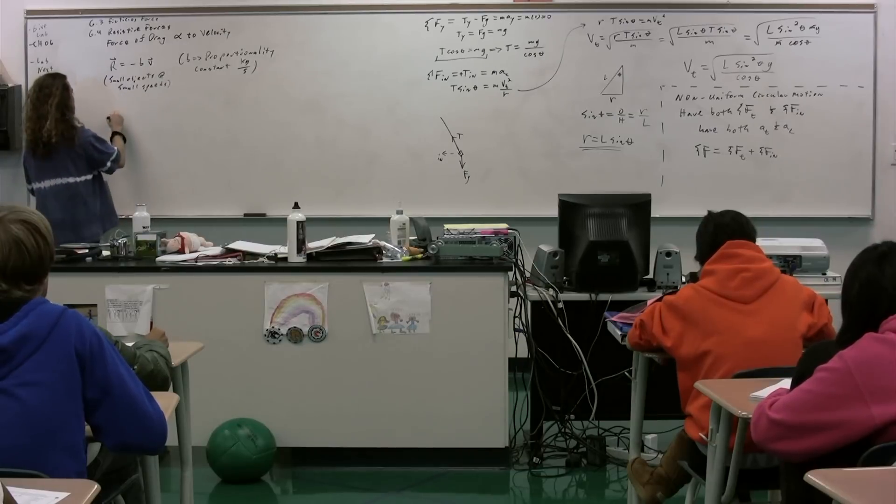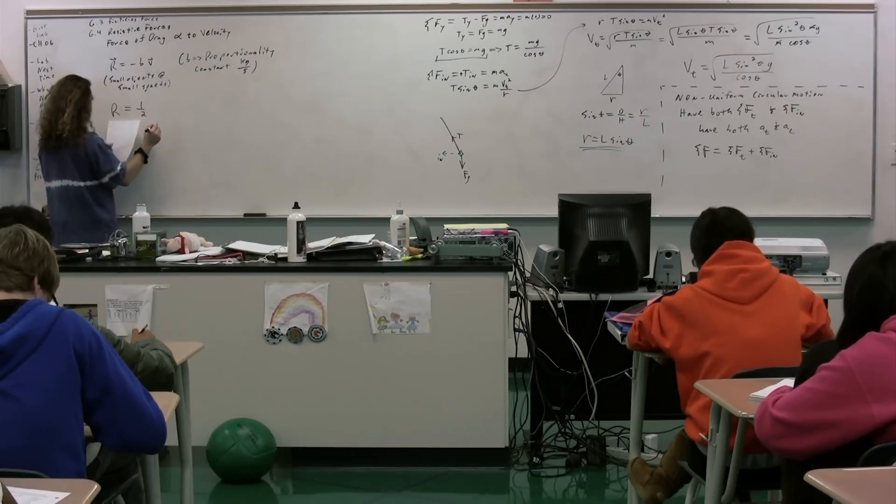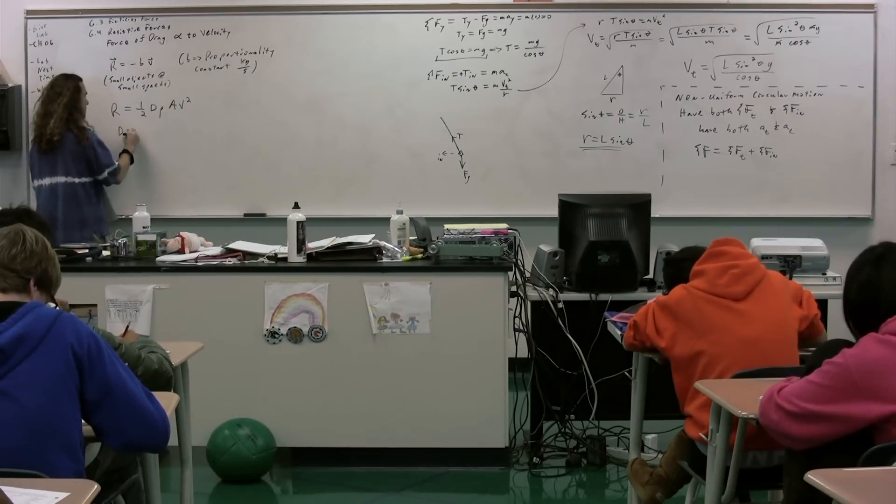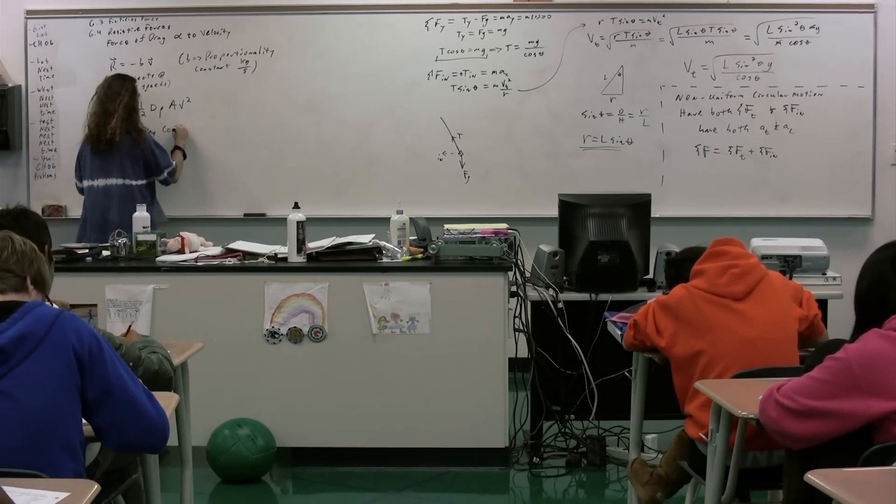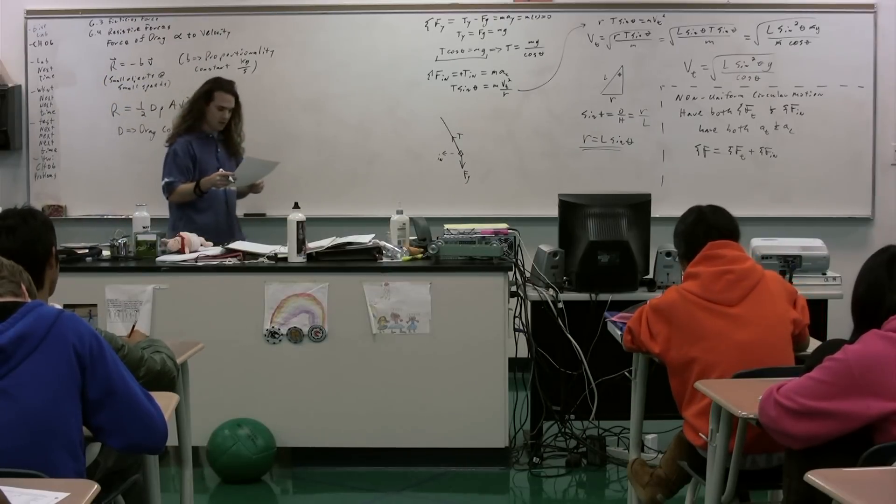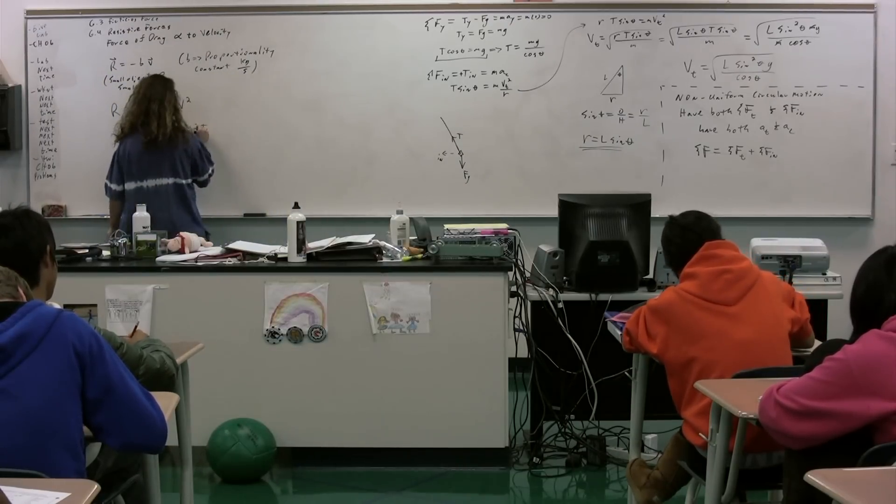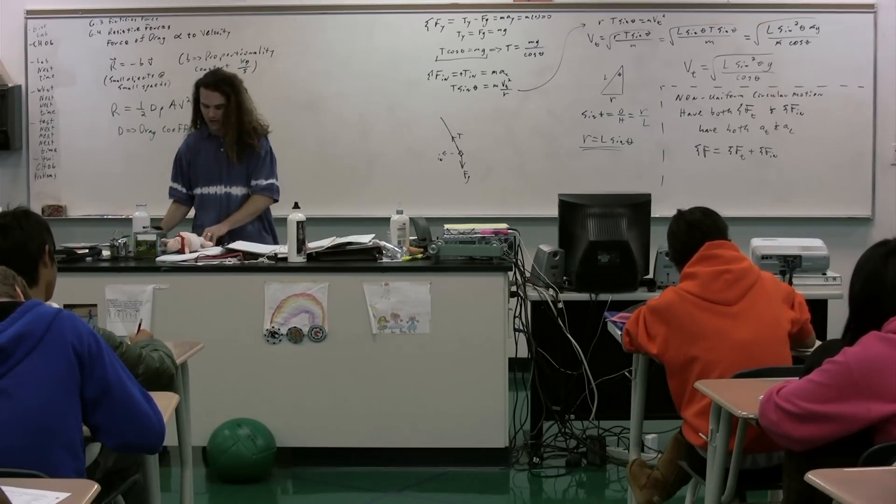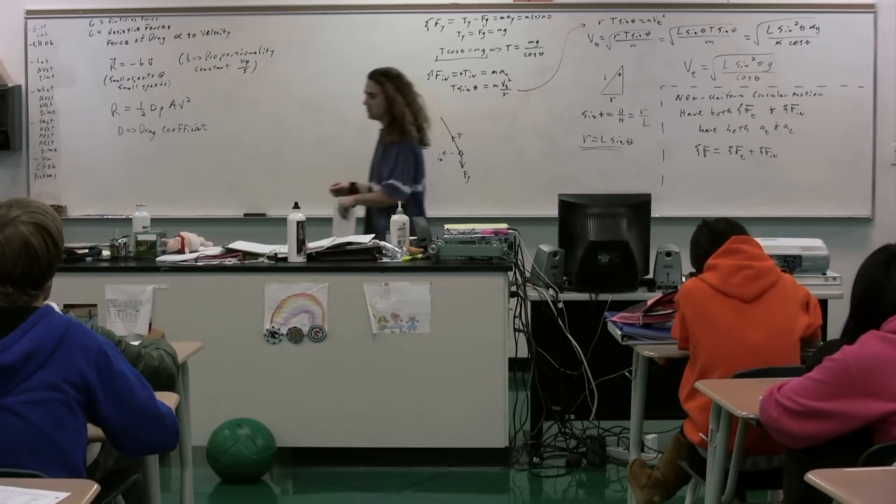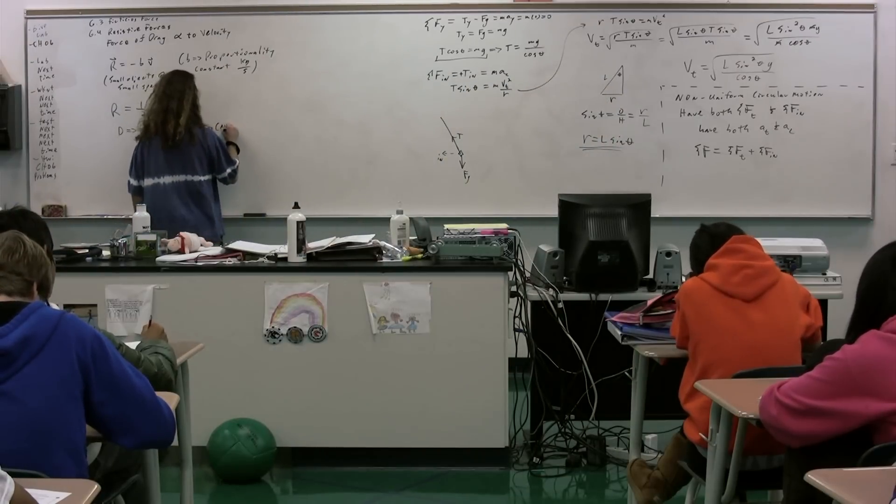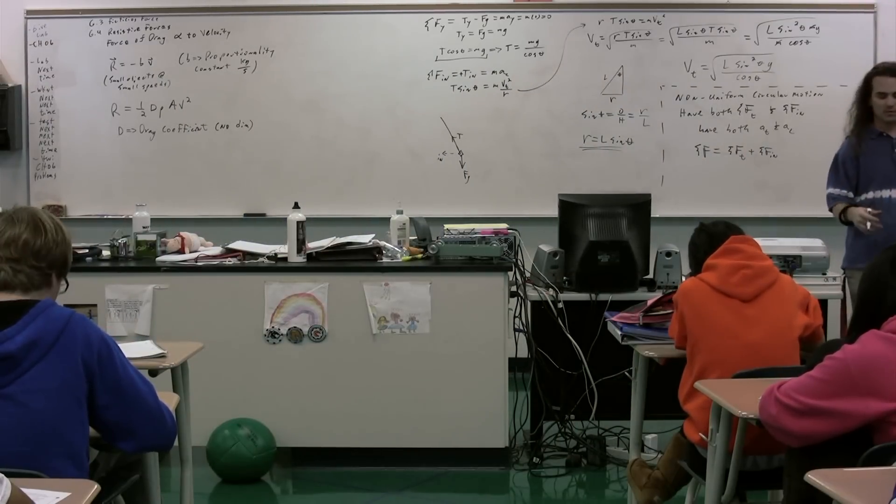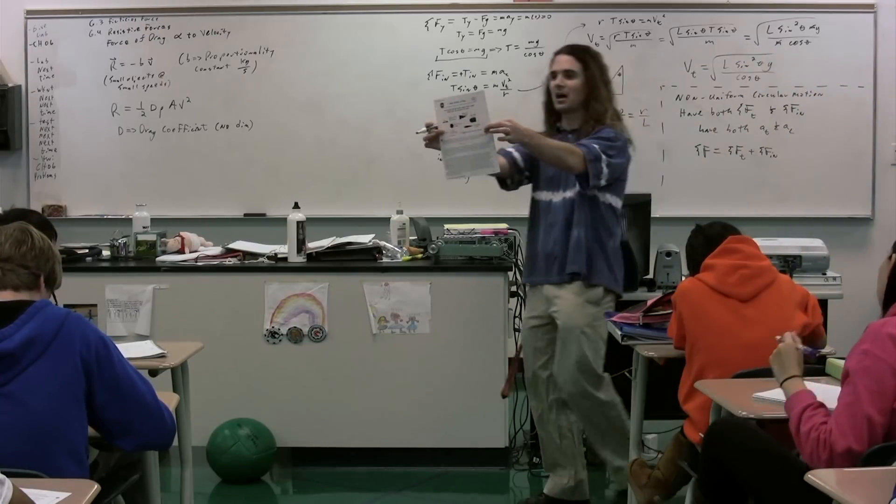We also have an equation which is the resistive force equal to one-half, and I'm going to walk through each one of these, capital D, rho, A, V squared. Capital D is called the drag coefficient. The drag coefficient depends on the shape of the object and the material the object is made of. The drag coefficient has no dimensions.